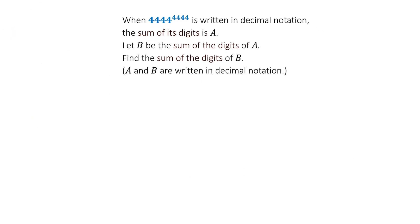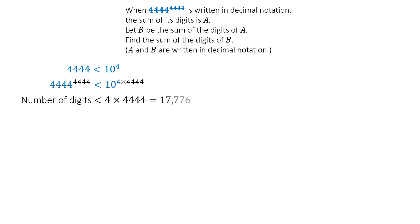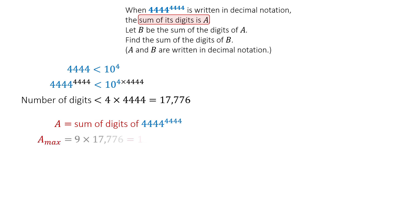We begin by calculating just how many digits this number might have. Since 4,444 is smaller than 10 to the 4, the given number is smaller than 10 to the power of 4 times 4,444. So the upper limit of the number of digits is 17,776. Each of these digits could be as large as 9, so the total sum of the digits, denoted as A, has a theoretical maximum of 9 times 17,776, which equals 159,984.